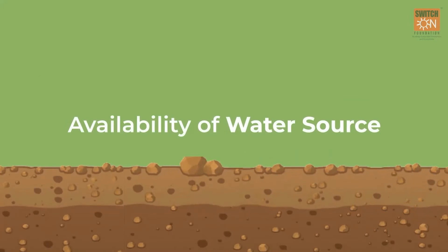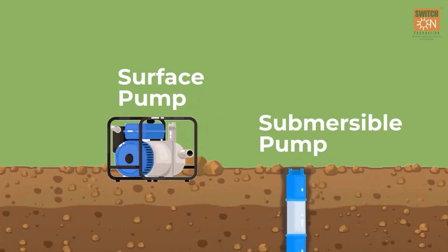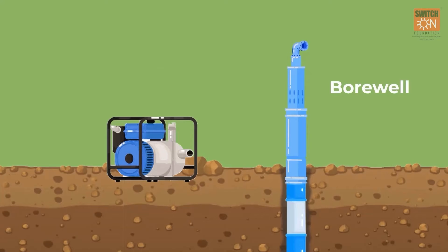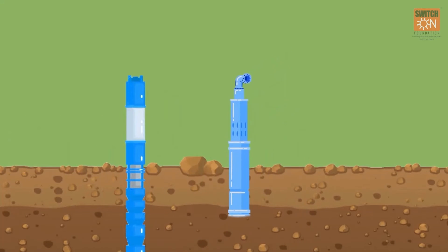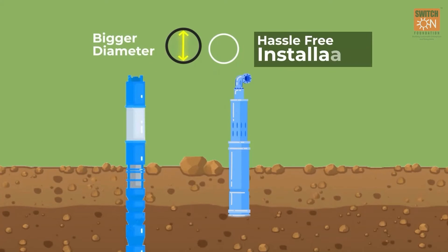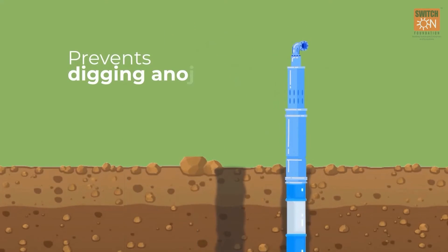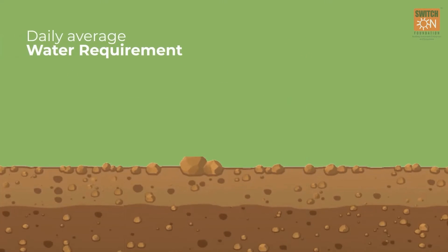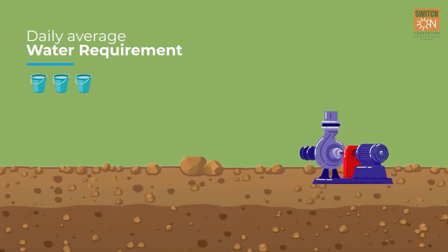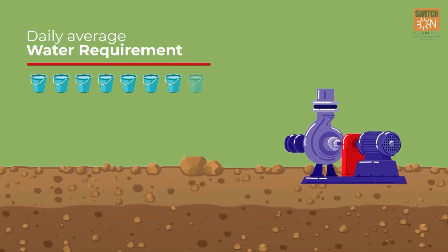Availability of water source is the initial deciding factor for the type of pump, i.e. surface or submersible. If a submersible pump is required to be installed, the size of the existing bore well becomes an important parameter, and a suitable pump whose diameter is lesser than that of the bore well is selected for hassle-free installation. This also prevents digging another bore well.